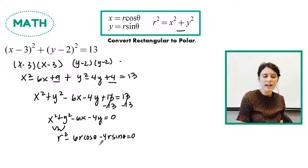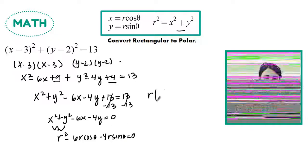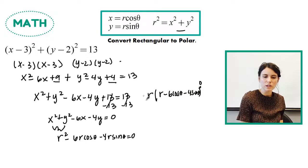And then again, I notice that I have r's at all places, so I'm going to factor out an r. So I have r and then r minus 6 cosine theta minus 4 sine theta equals 0. So I've just factored an r out of everything.